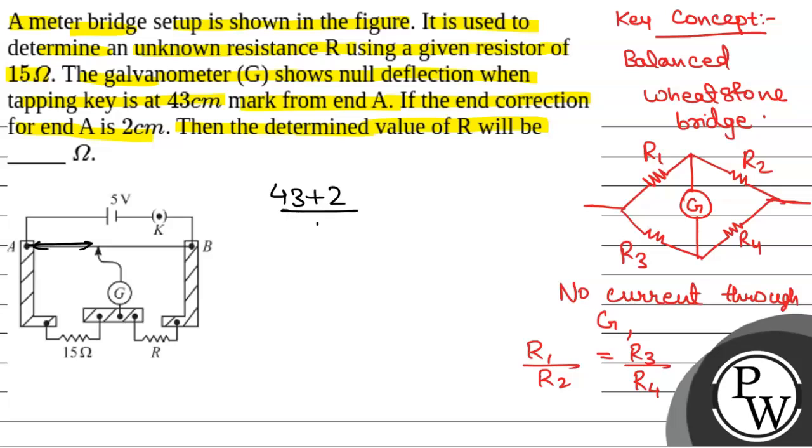...so 43 plus 2 by 15. That will be 57 cm. So this is 43 cm and the total length is 100, so this will be 57 by R. 43 plus 2 by 15 is equal to 57 by R. This is from concept of Wheatstone bridge.